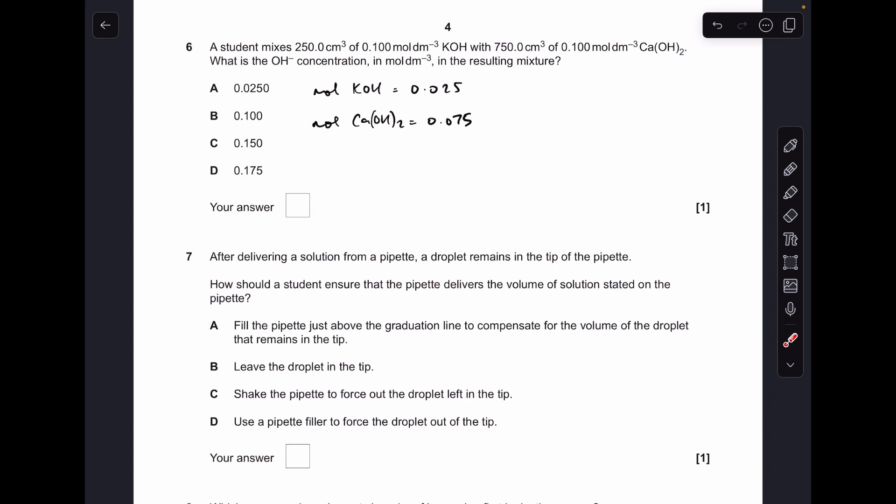Number six: first thing I've done is worked out the moles of KOH and Ca(OH)2. That's just concentration times volume in each case. Then the next thing I've got to do is work out the moles of OH- ions. For KOH it's going to be the same because there's one OH- ion per mole, whereas in Ca(OH)2 you've got two moles of OH- ions, so we're going to need to double this one.